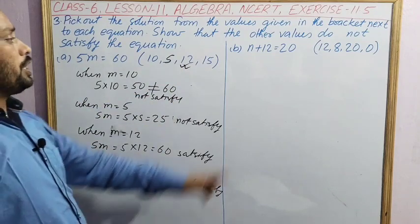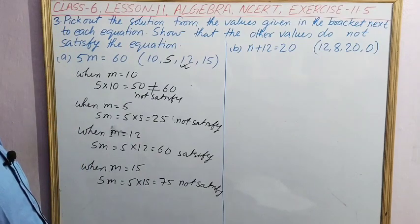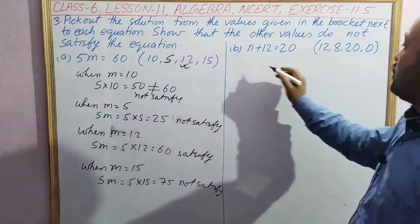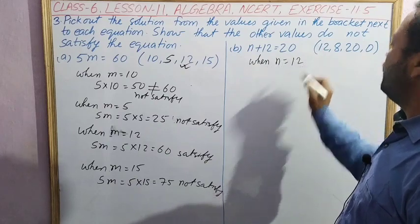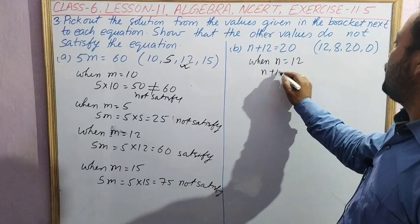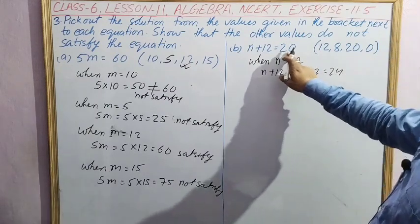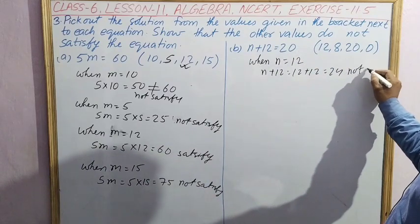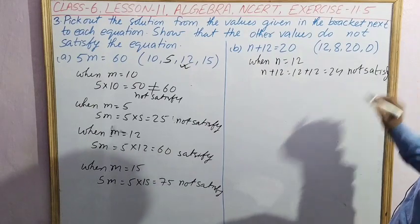Next equation: n plus 12 is equal to 20. Values are 12, 8, 20 and 0. When n equal to 12, we put n equal to 12: n plus 12, that is 12 plus 12 is equal to 24. Here it is 20 and here it is coming 24. So this one is not satisfying. Not satisfy.